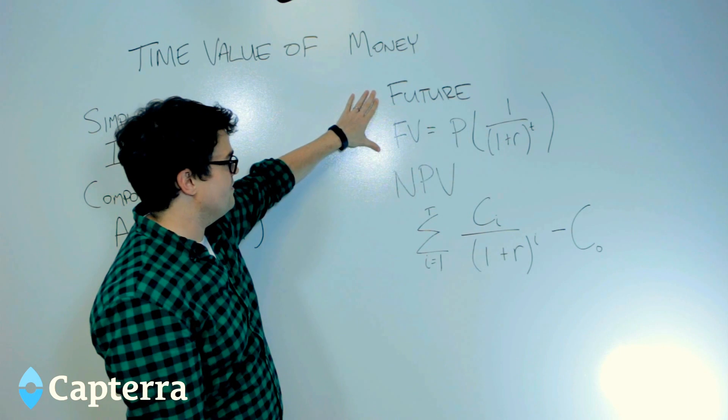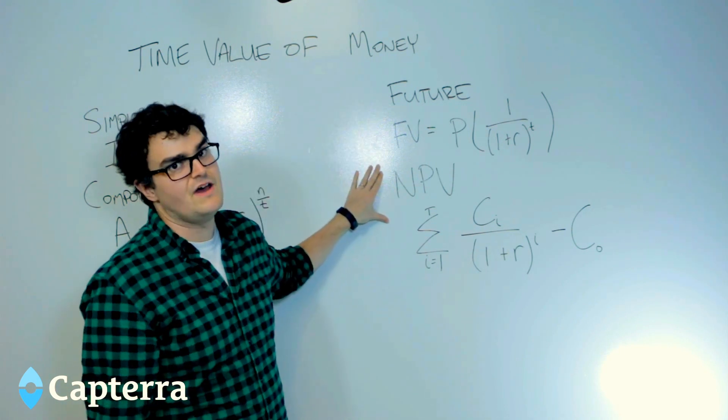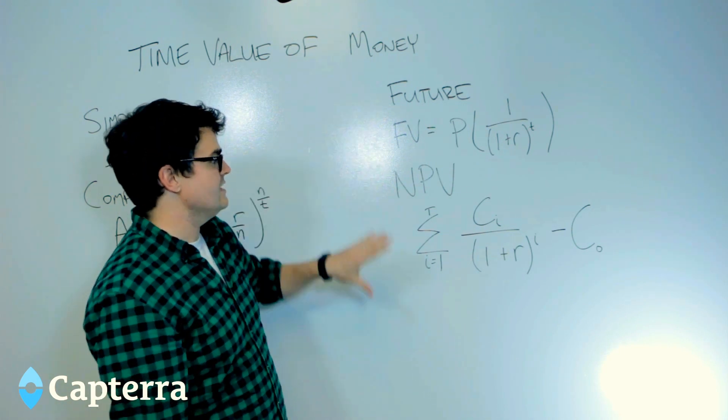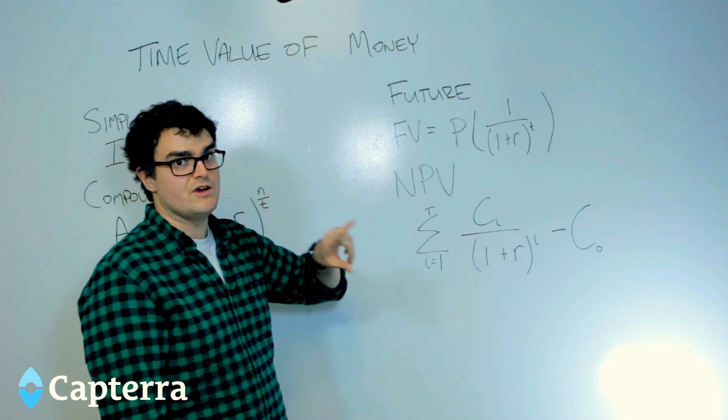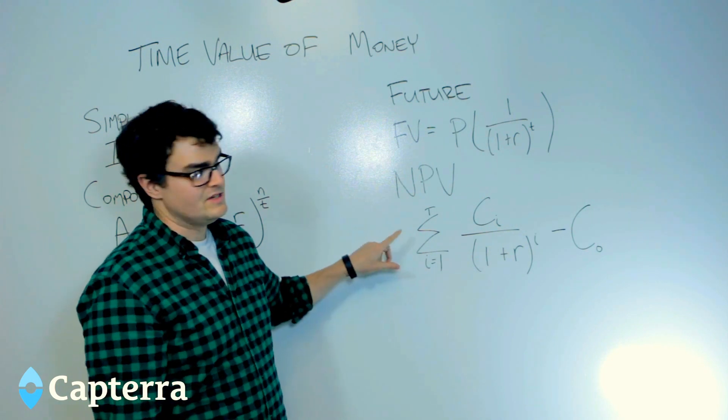The future value of money and the net present value of money or investments. In these, and again, with some of this we're not even going to bother diving into the math. And I'm sorry if you came here for math. But you can get this anywhere.